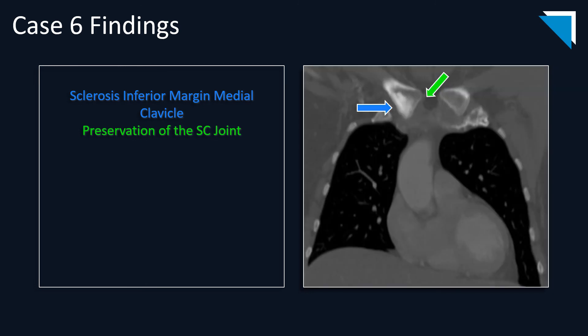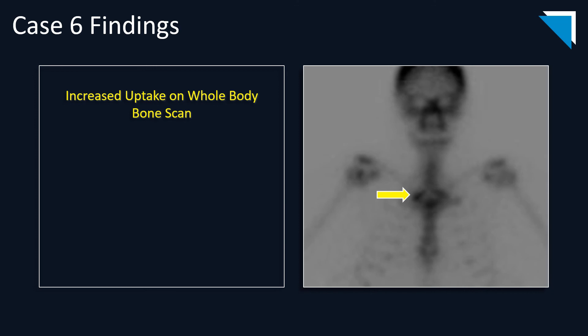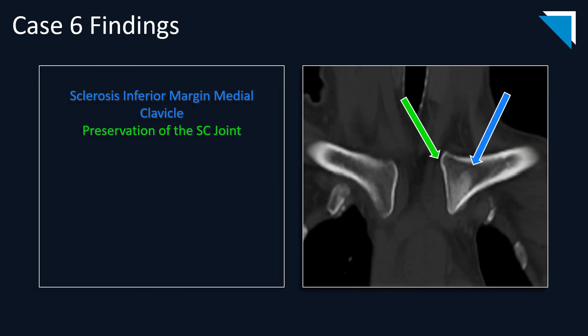On a coronal CT image, there is sclerosis along the inferior and medial margin of the clavicular head with preservation of the sternoclavicular joint. A whole-body bone scan was performed to exclude metastatic disease, which revealed increased uptake within the medial right clavicular head with no additional areas of uptake. A different patient demonstrates sclerosis within the medial left clavicular head with preservation of the sternoclavicular joint.